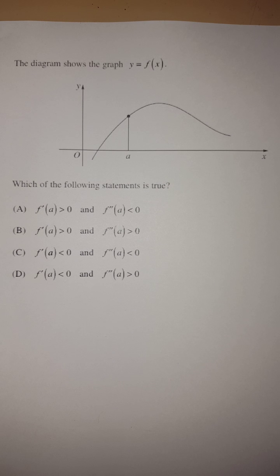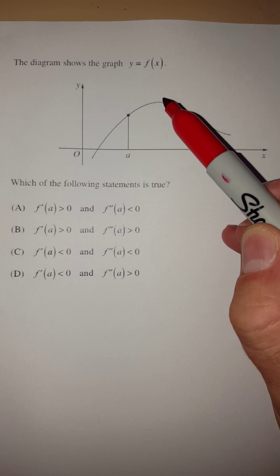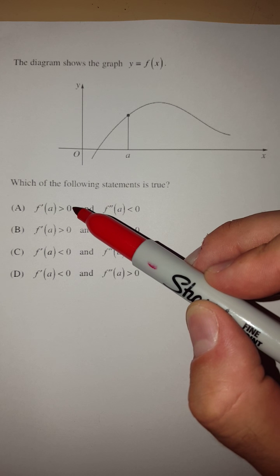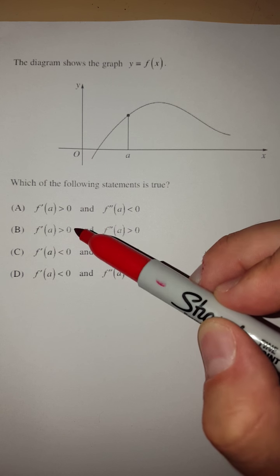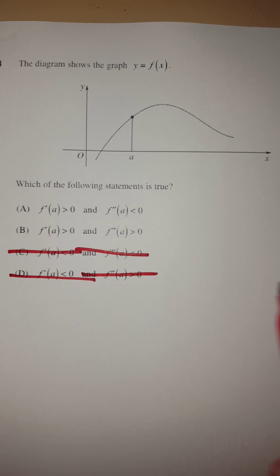So the first thing that we should be able to do is eliminate some answers. So clearly, at the point A, that function is increasing, which means it has a positive first derivative. So we only want positive values, A and B. So that means straight away, we can scrap C and D as possible solutions,